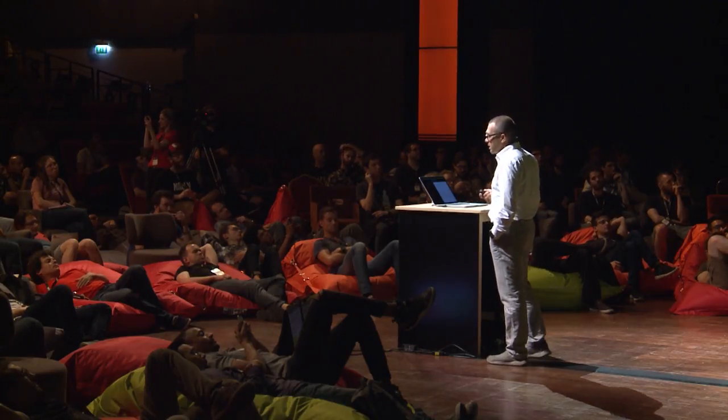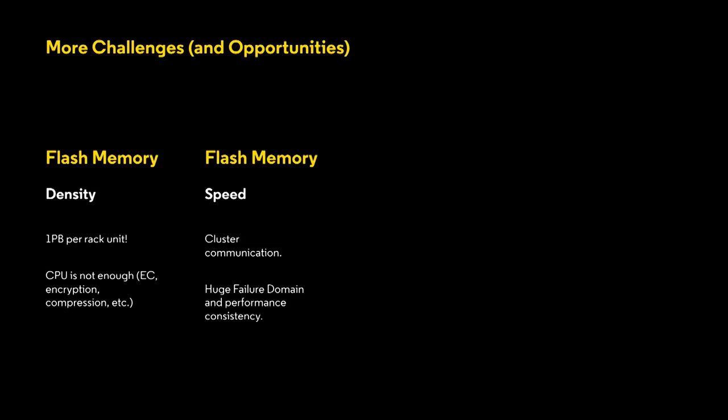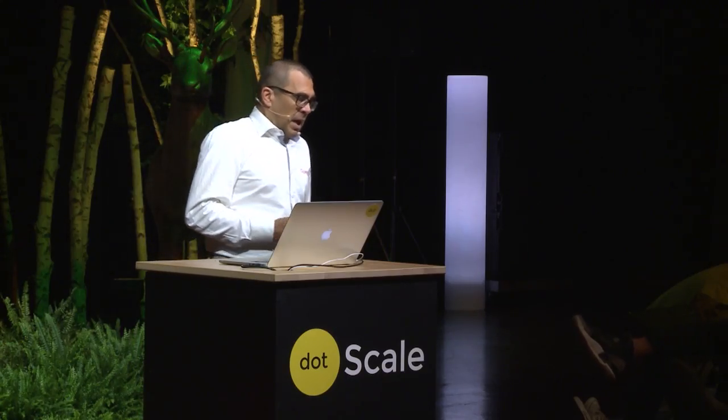The second challenge is speed, because you have a lot of problems with all this density and the network connections. Again, the huge failure domain created by a single node of one petabyte — we are talking about 40 petabytes per rack here. Also the workloads are changing, because we are looking everywhere to reduce the CPU-to-data latency, to reduce the distance between the two.